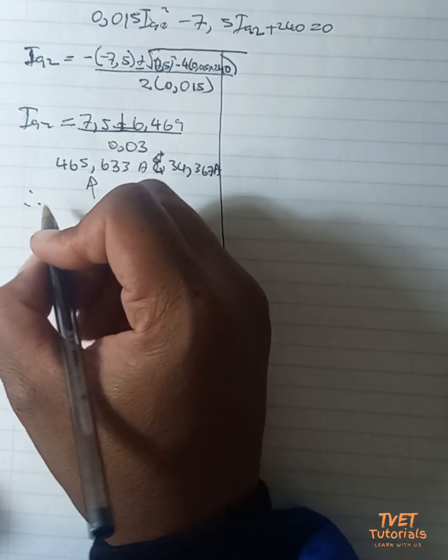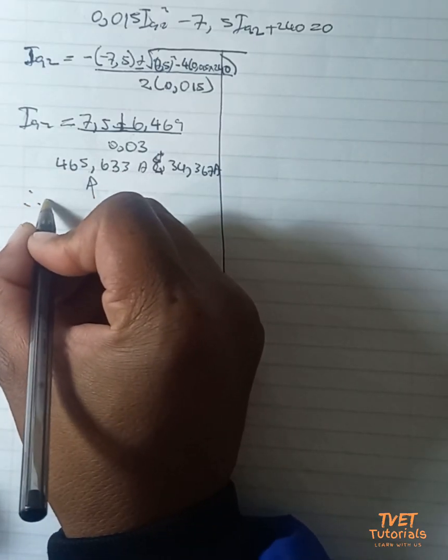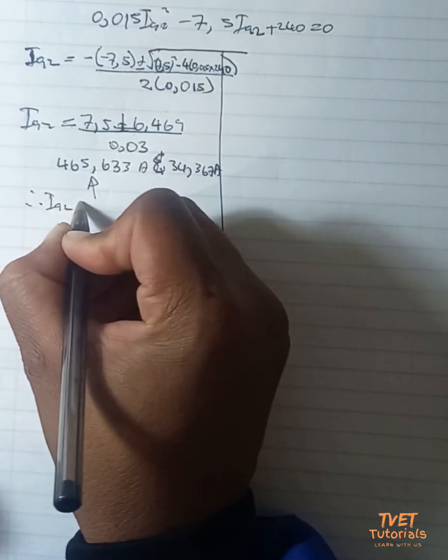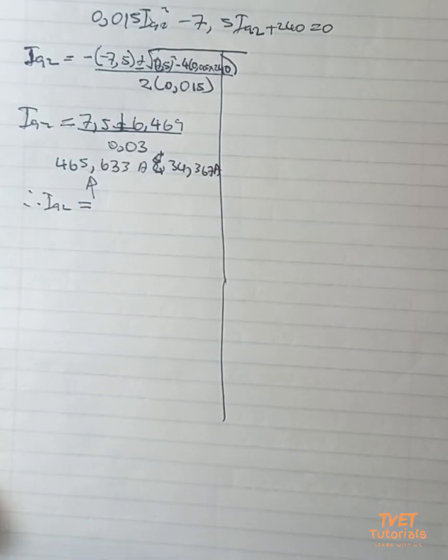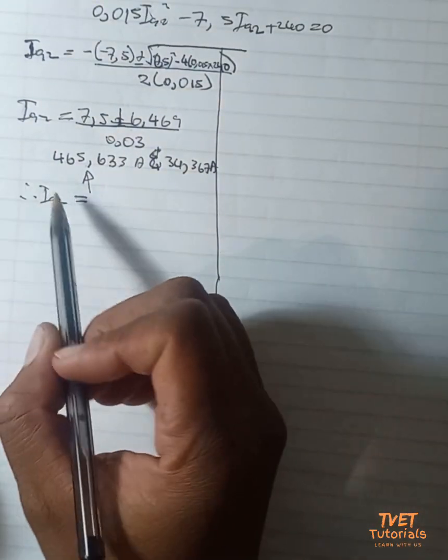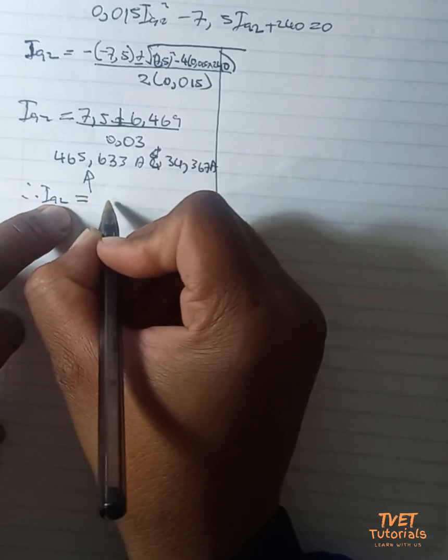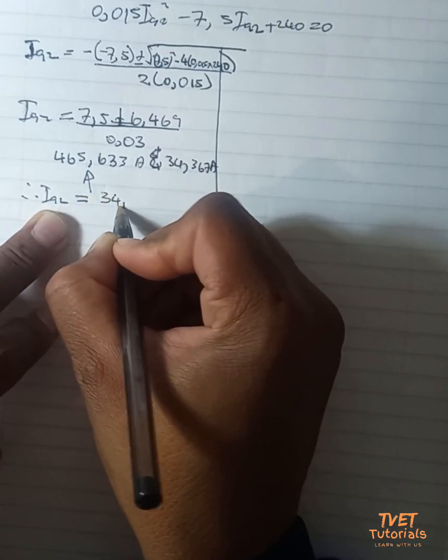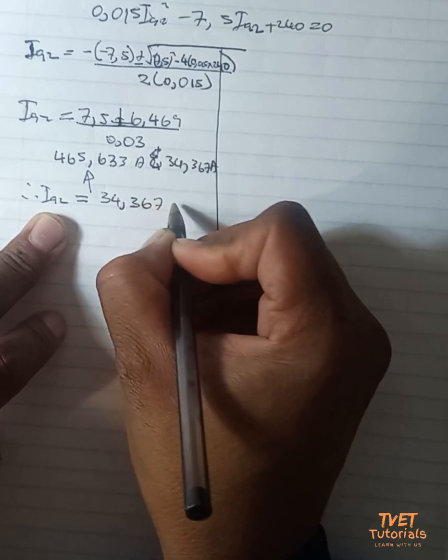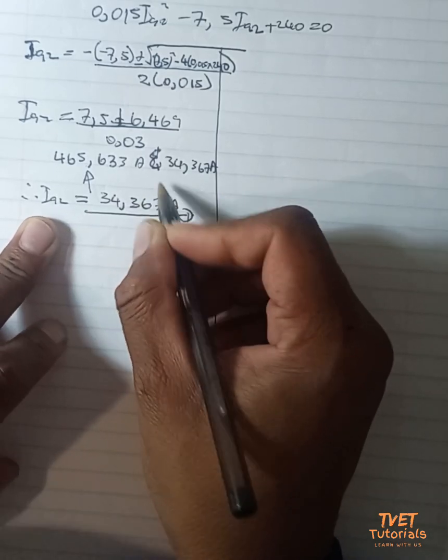So we'll use this as our I_a2. Therefore I_a2 is then equal to 4.367 amperes, so this is the value that we'll use for I_a2.